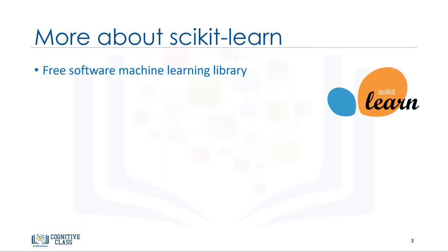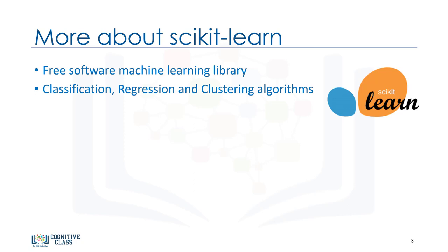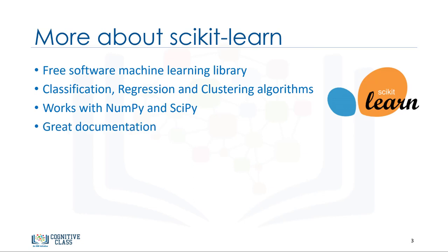Scikit-learn is a free machine learning library for the Python programming language. It has most of the classification, regression, and clustering algorithms, and it's designed to work with the Python numerical and scientific libraries, NumPy and SciPy. Also, it includes very good documentation. On top of that, implementing machine learning models with Scikit-learn is really easy with a few lines of Python code.